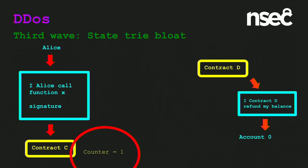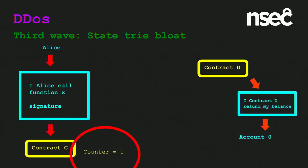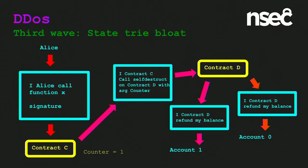You'd be forgiven for thinking the contract no longer exists after calling self-destruct. But if we review the yellow paper — the technical reference paper for Ethereum — it says 'halt execution for later deletion.' The contract is registered for deletion, but won't actually be deleted until the transaction execution ends. The counter increments and contract C does the same thing over and over with counter one, calling self-destruct again and trying to refund address one with nothing. Contract C does this over and over until it runs out of gas, and the attacker continues sending these transactions until the problem is patched.